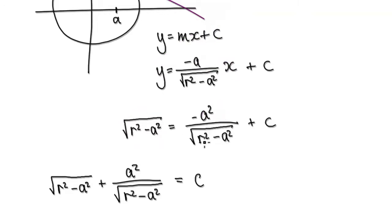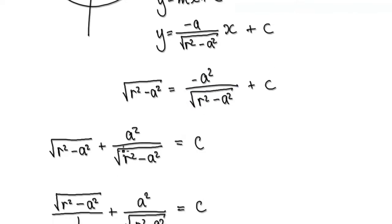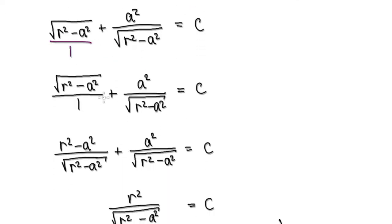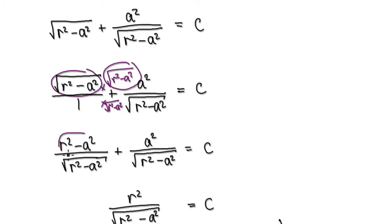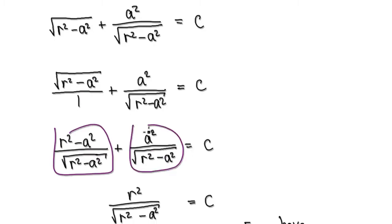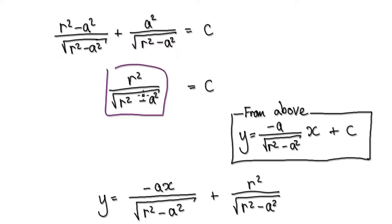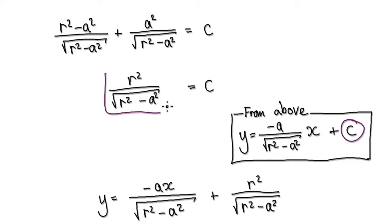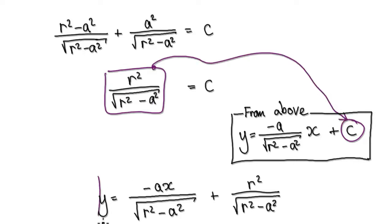That would then become, if you put a into x, it becomes minus a squared, and then y would become the square root of r squared minus a squared. So now we can work out c. To work out c, add this block to both sides, and that gives us this. Tidy this up — imagine this as being a fraction over one. Get the two denominators to be the same by multiplying top and bottom by the square root of r squared minus a squared. Then r squared minus a squared, times by itself, gives r squared minus a squared. Merging the two fractions together gives the intercept c.